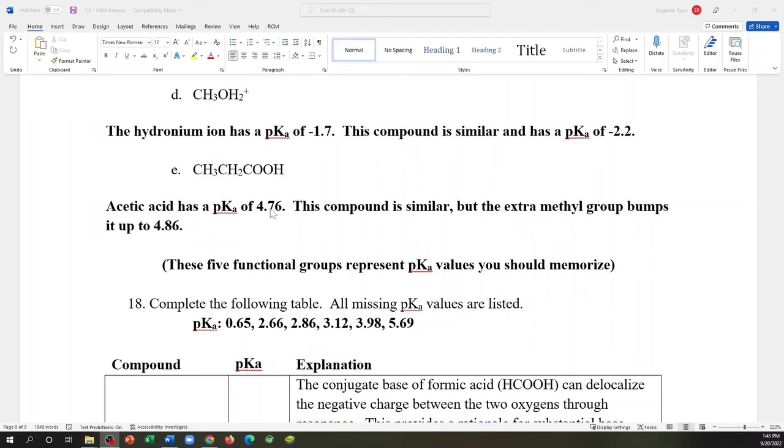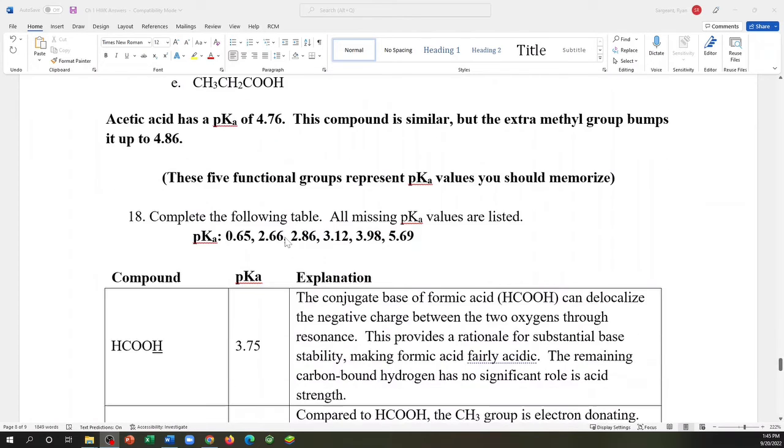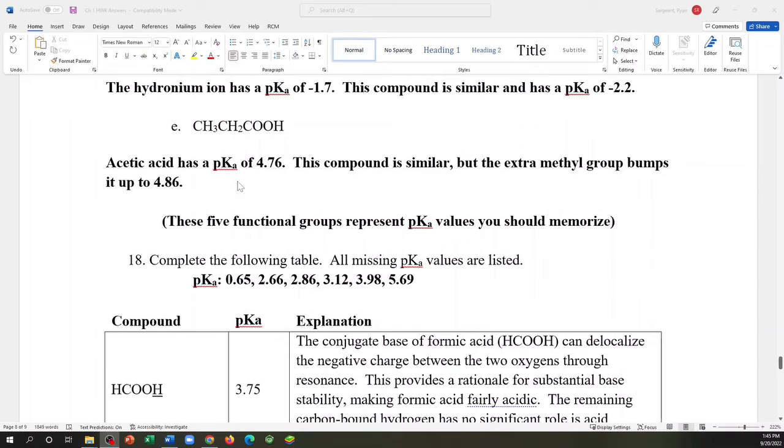It's a logarithmic scale. So going from a 4.76 to a 4.86 is not a rounding issue. That actually means something. It's in the ballpark of about twice as less acidic if you go up by a tenth of a unit.